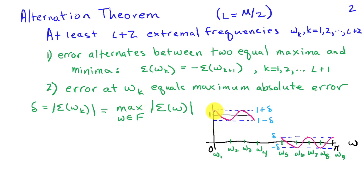So here I've drawn a picture of this. And you can see that we have these alternating maxima and minima in the error where it goes from 1 plus delta to 1 minus delta to 1 plus delta to 1 minus delta. And then we have delta minus delta plus delta minus delta plus delta. So the error is alternating. And the omega sub Ks, which I've labeled here, are the extremal frequencies. So in this case, we have nine extremal frequencies, which would imply that L is equal to 7 or M is equal to 14.